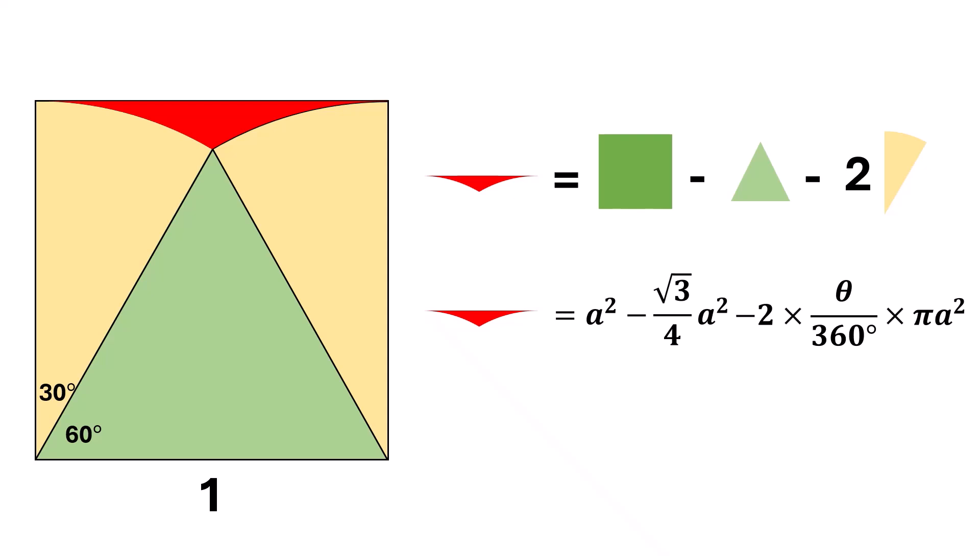Now, substitute the value of a as 1. We will get 1 squared minus square root of 3 over 4 times 1 squared minus 2 times 30 degrees over 360 degrees times pi times 1 squared. Simplifying this, we have 1 minus square root of 3 over 4 minus pi over 6.